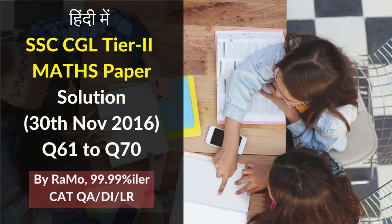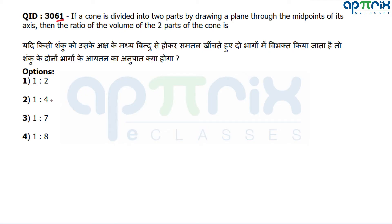Hello everyone. I am here to discuss lesson 1.7 — SSC CGL Tier 2, 2016, 30th November paper for maths. Question number 61: a cone is divided into two parts through the midpoints of its axis. What will be the ratio of the volume of the two parts of the cone? Let's draw the structure of the cone.